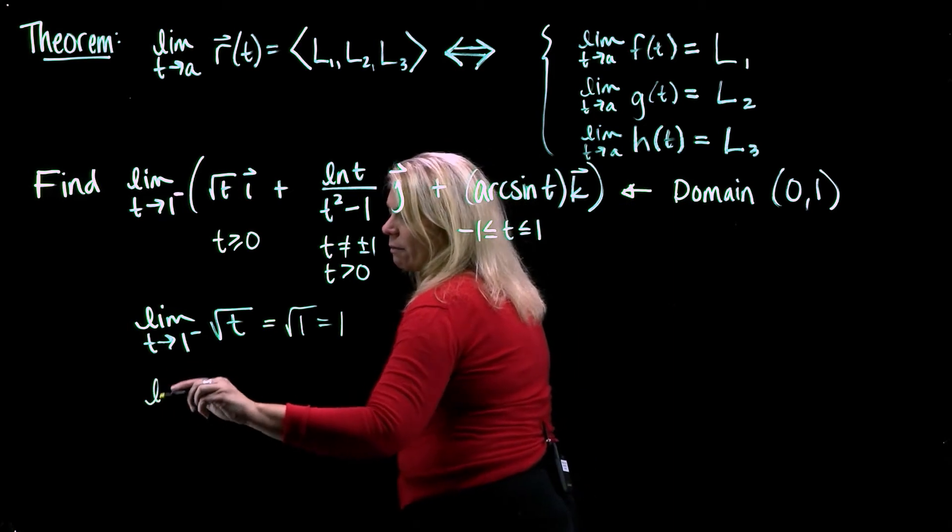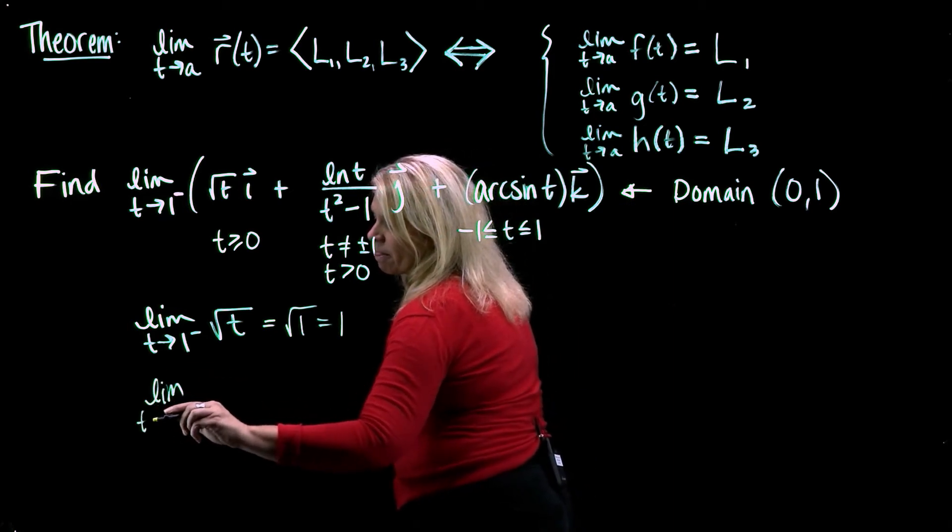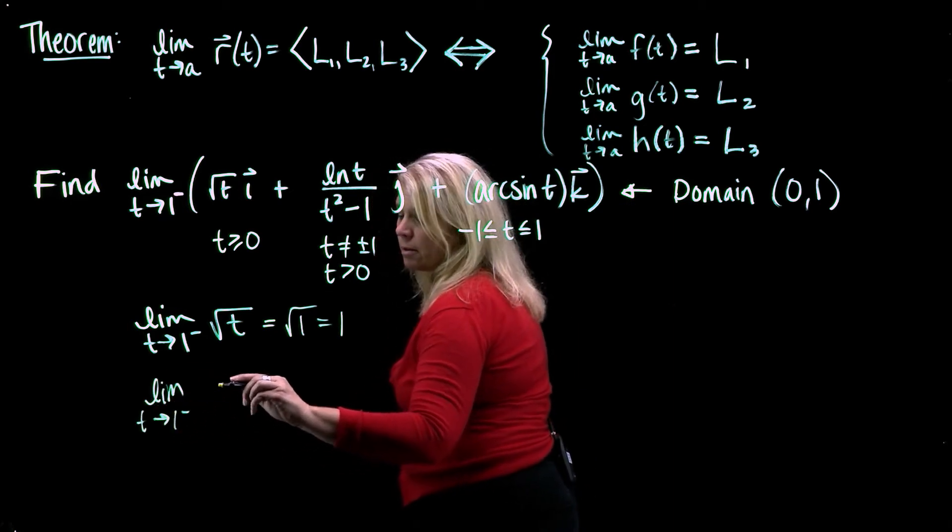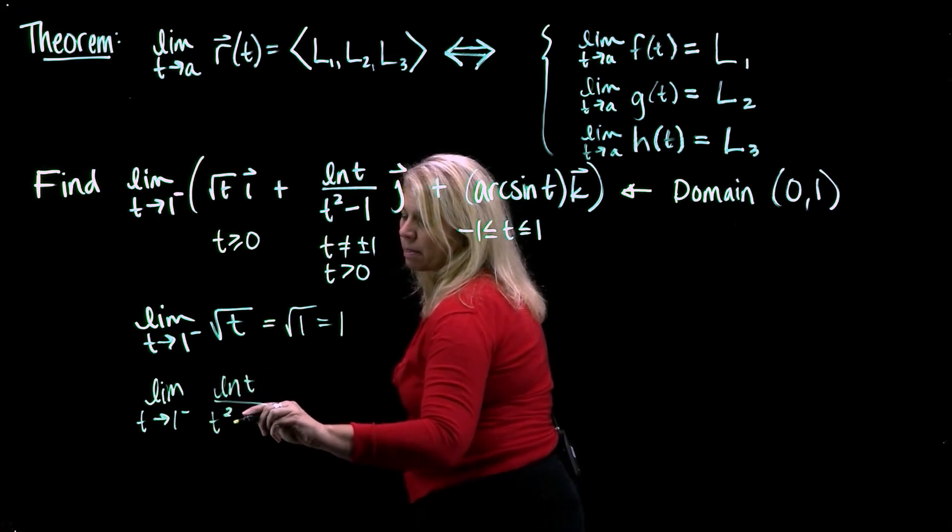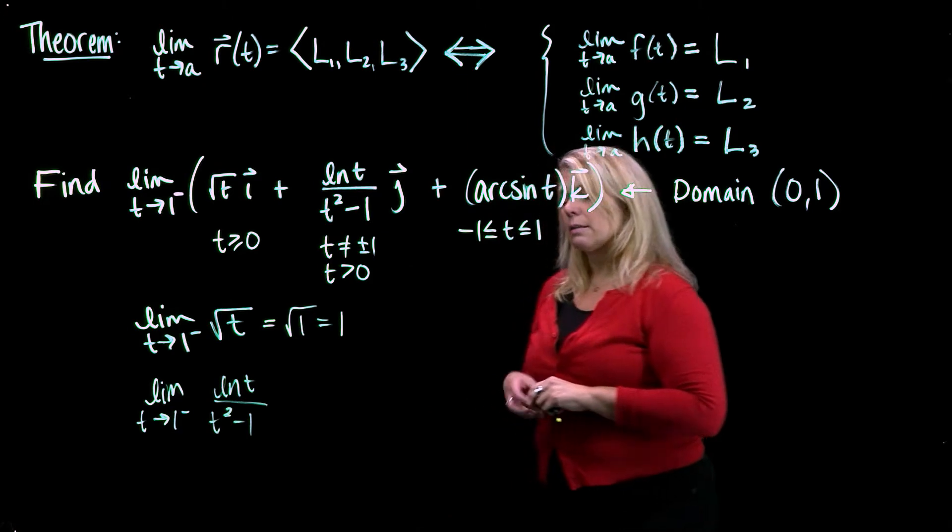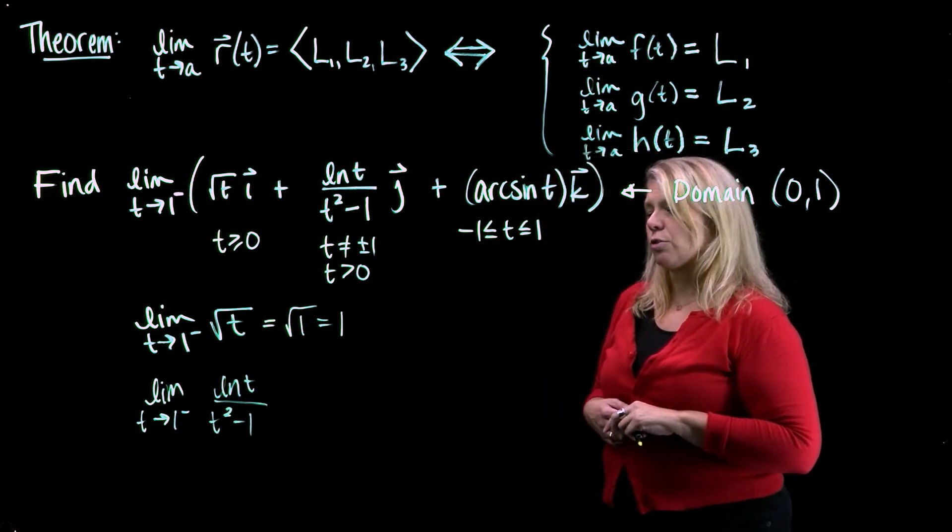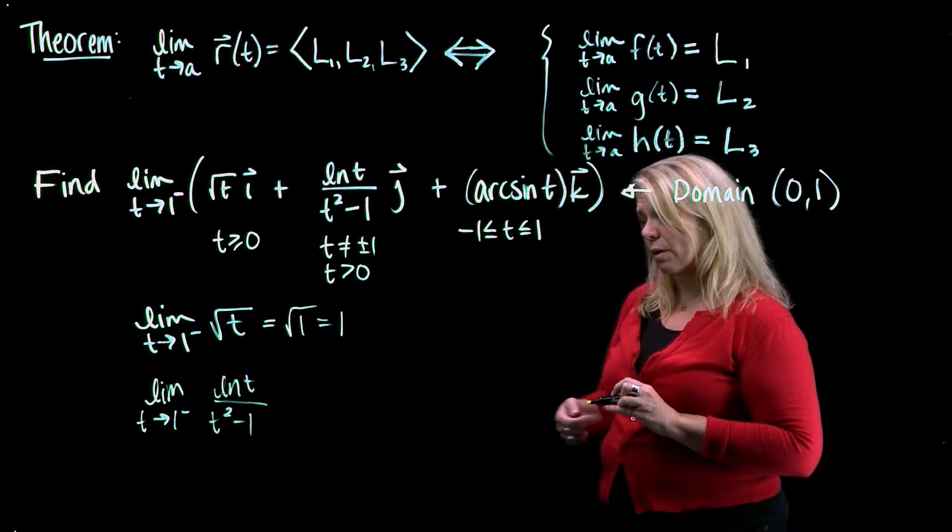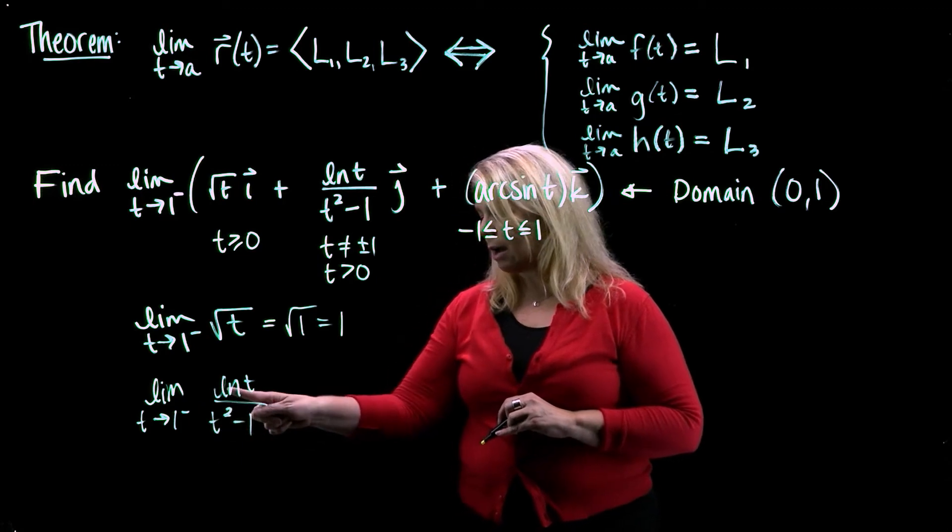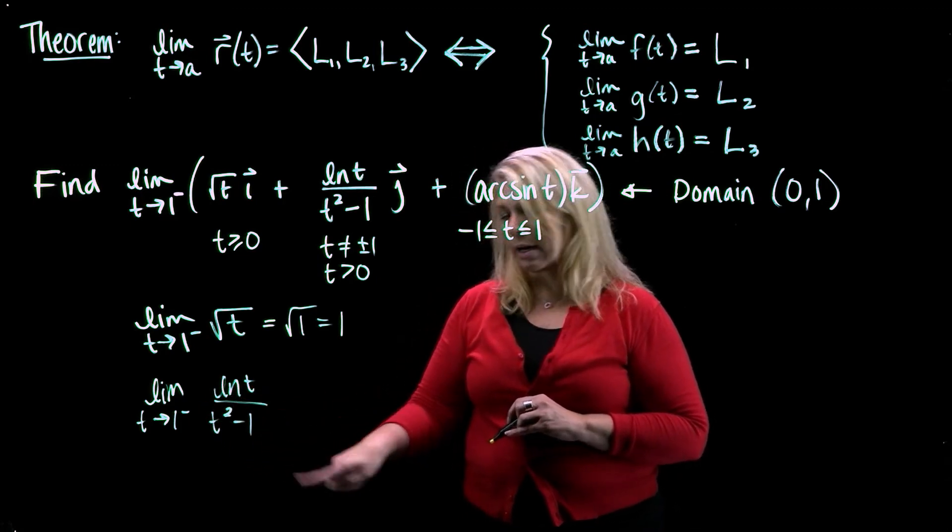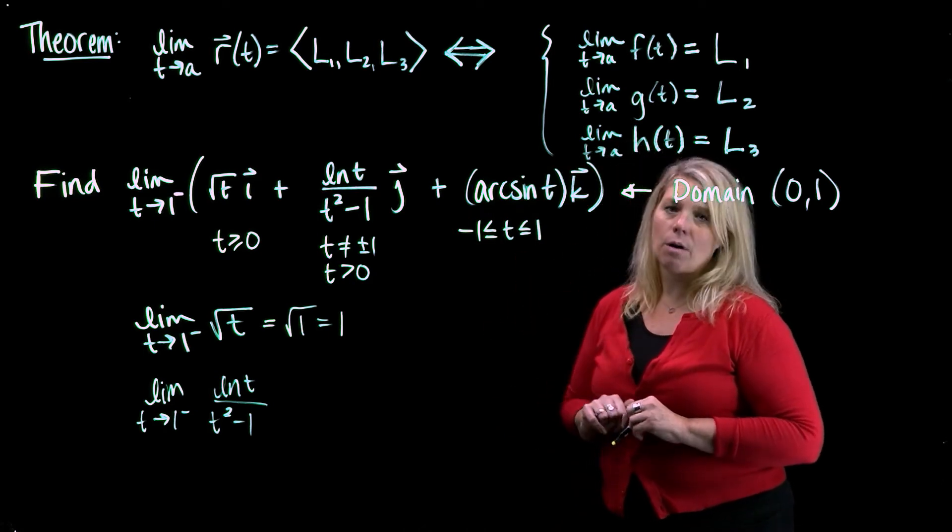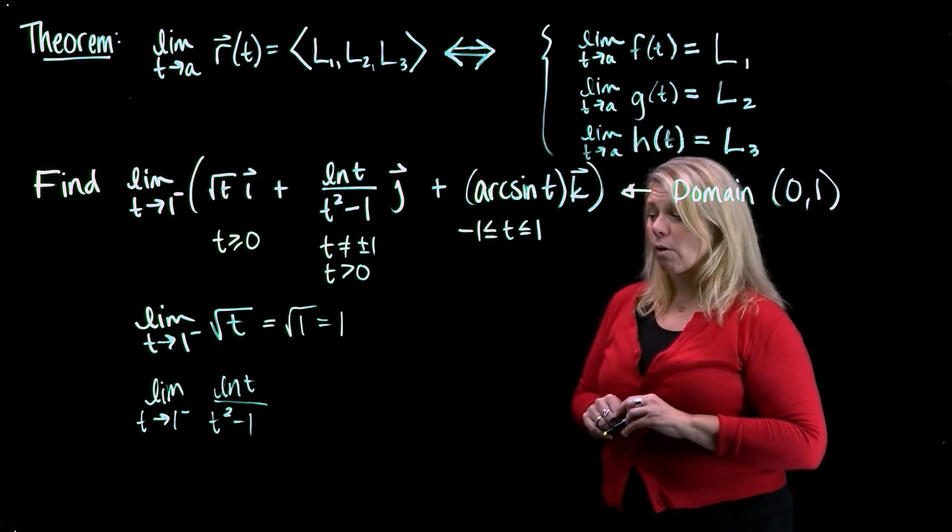Our second component function... So if I try to think about using substitution in that one, you run into some trouble. Natural log of 1 is 0, and 1 squared minus 1 is 0. So that is a 0 over 0 indeterminate form.